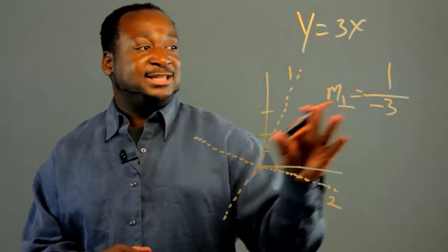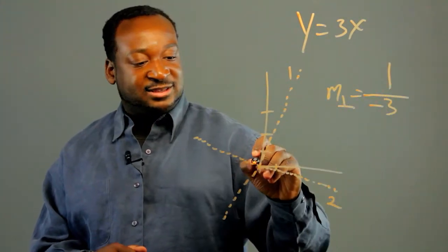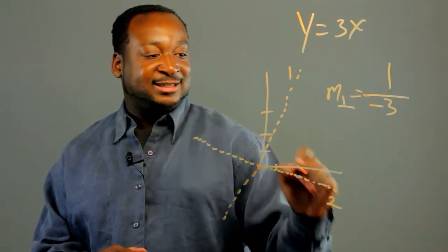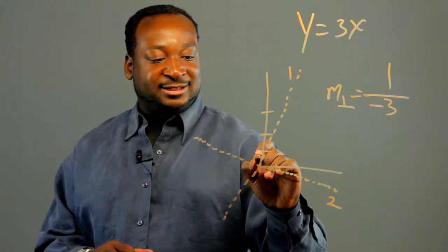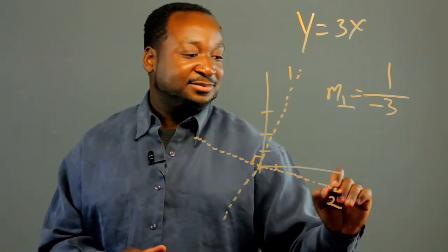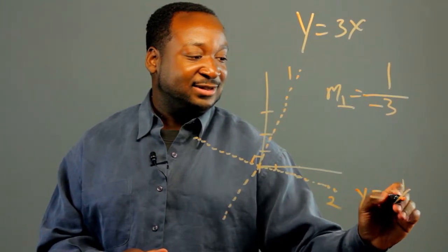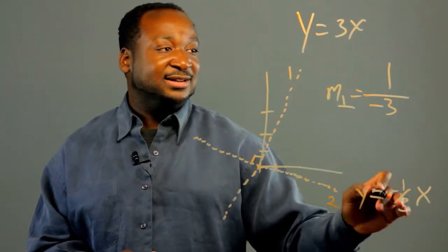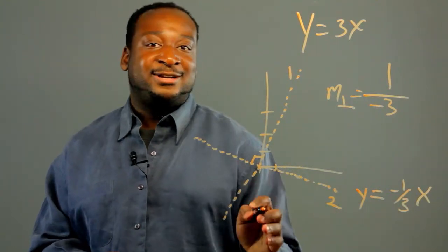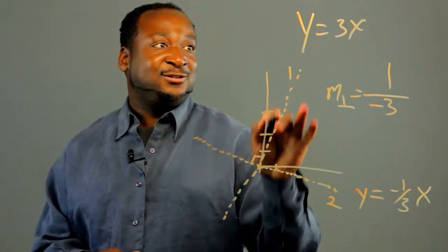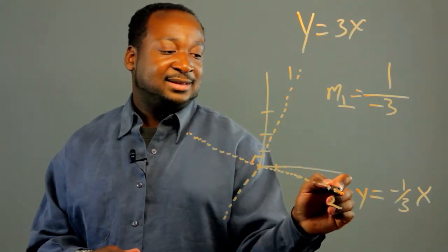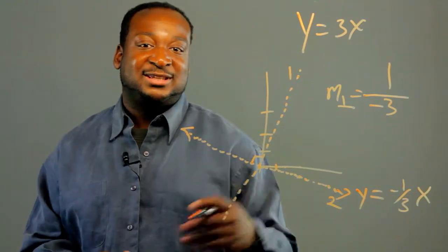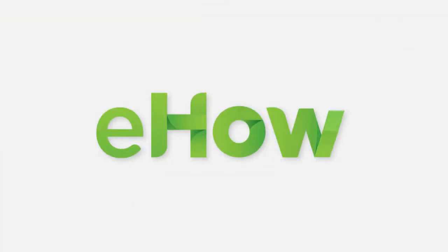Notice, since I used the opposite reciprocal, it's going to give me the perpendicular. So when these two lines intersect — line 1 and line 2 — they're going to be perpendicular to each other. Here's the plotting of y equals negative 1/3 x. The opposite reciprocal of this slope, negative 1/3, creates the perpendicular line to y equals 3x. And that is what's called the opposite reciprocal. Thank you.